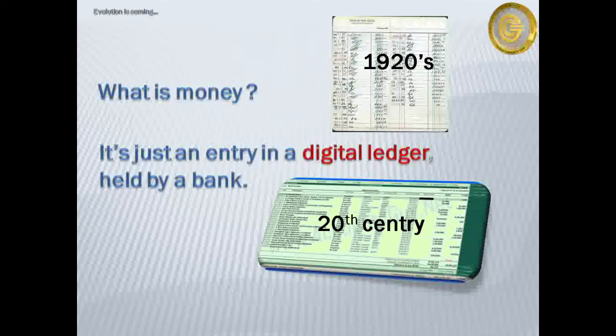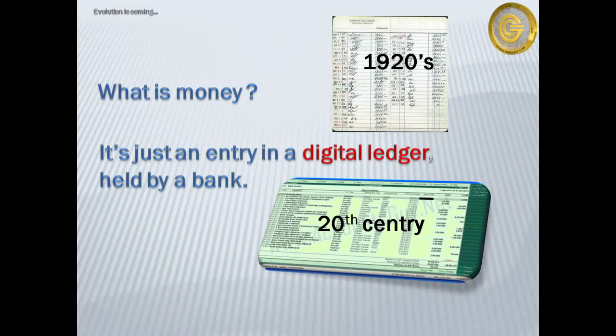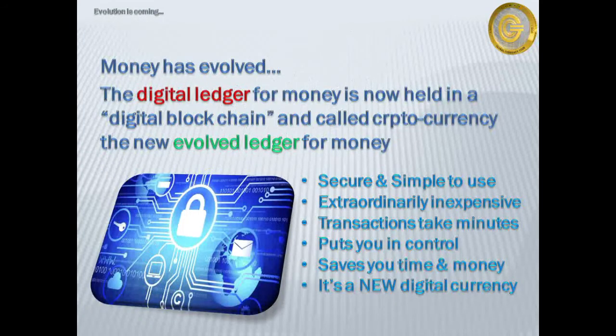So what is today's money? Well, it's nothing more than an entry in a digital ledger held on a computer by a bank. In the 1920s, the fact that you had money would have been recorded by a bank in a handwritten book or ledger. Now, of course, everything — meaning your bank balance — is held as a series of bits and bytes on a bank's computer or in one of those clouds. It doesn't stop there. Money continues to evolve. The concept of the bank's digital ledger to hold a record of your money has now evolved into blockchain technology.